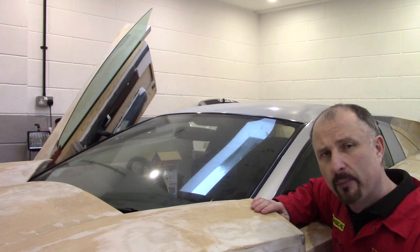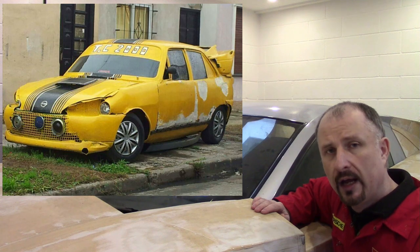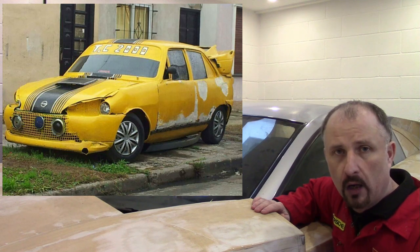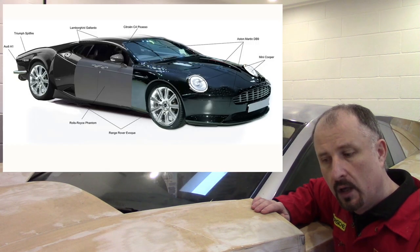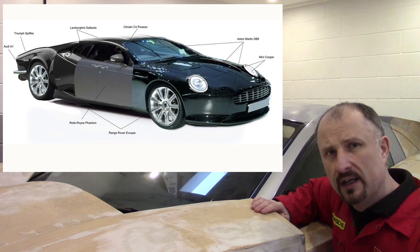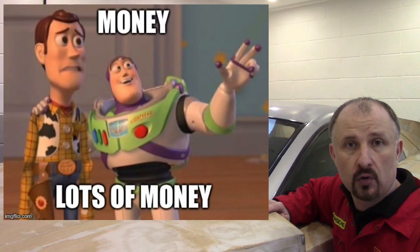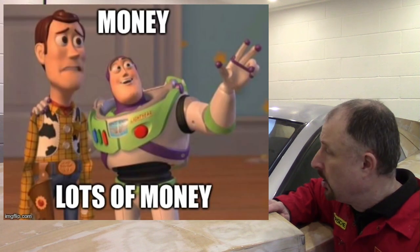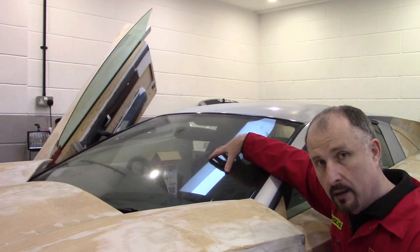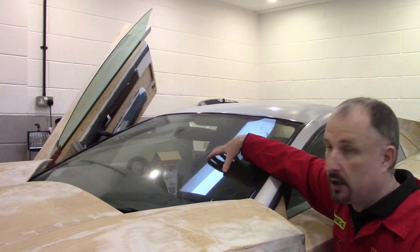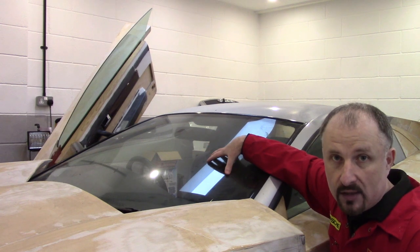If you're thinking about building and designing your own supercar, you're going to have to source parts from other vehicles to complete your build. There are certain things that are just too complicated and too expensive to do yourself, and one of them is having the windscreen made. Let's take a look at how a genuine OEM windscreen is manufactured.